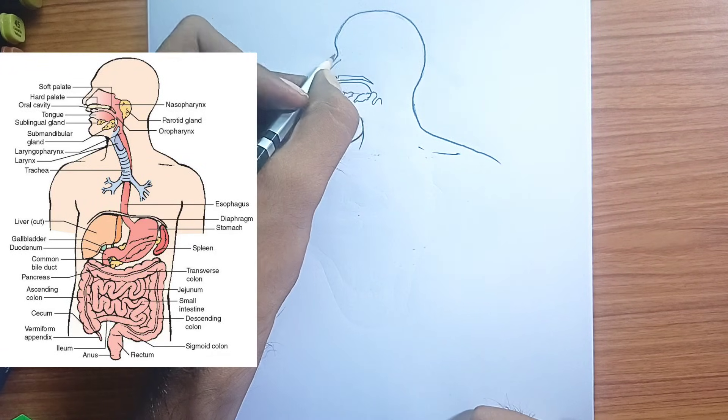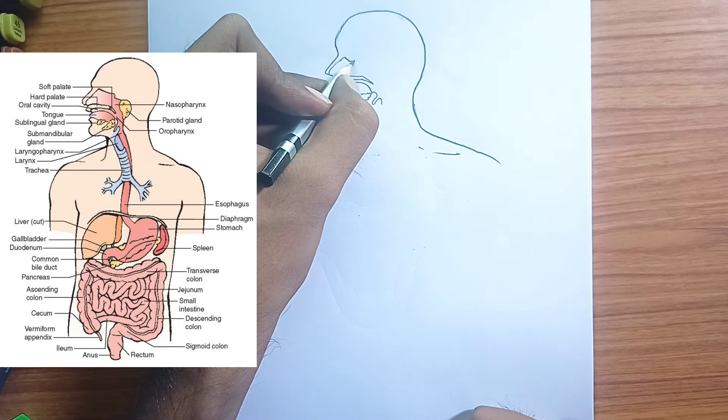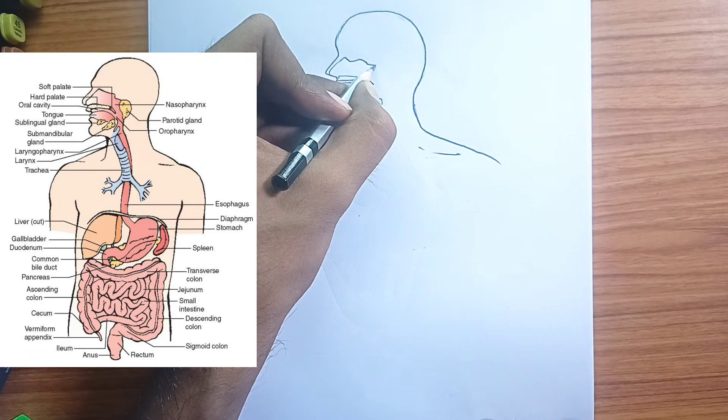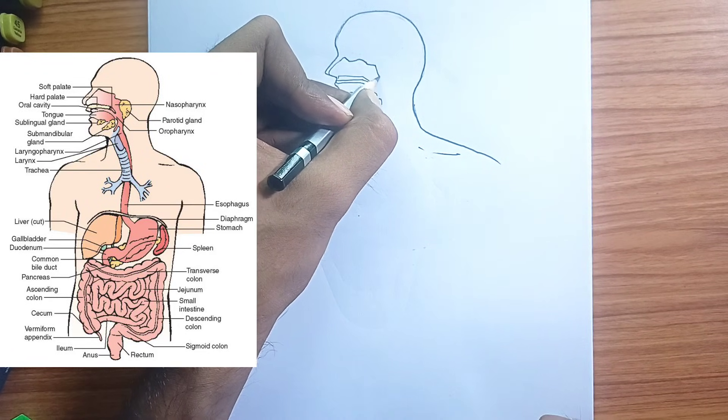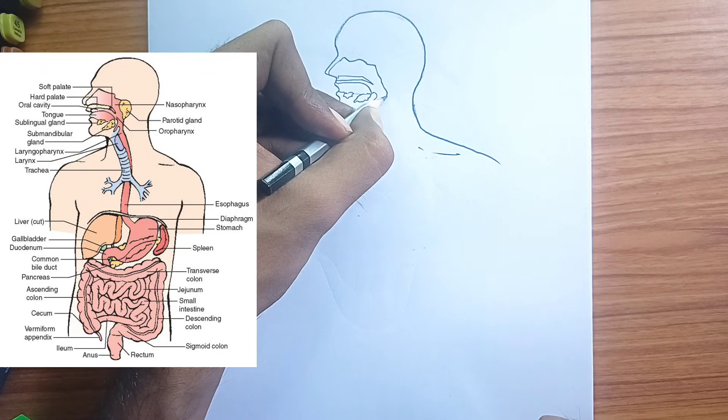Pancreas produces digestive enzymes that are released into the small intestine to break down carbohydrates, fats, and proteins. It also produces hormones like insulin.